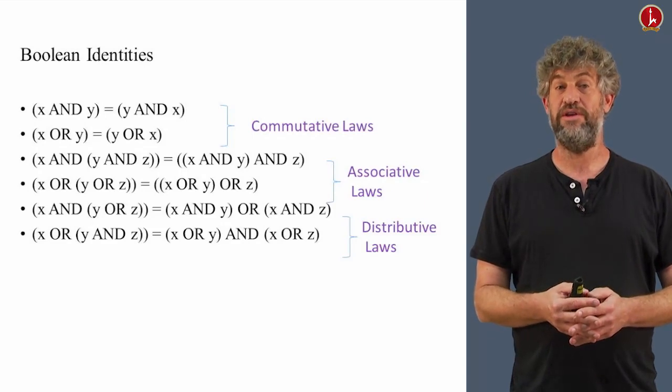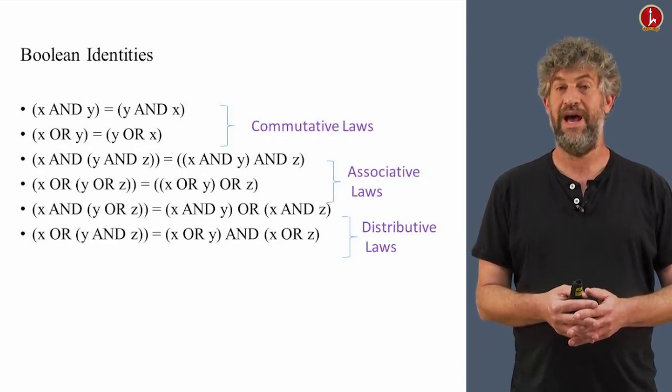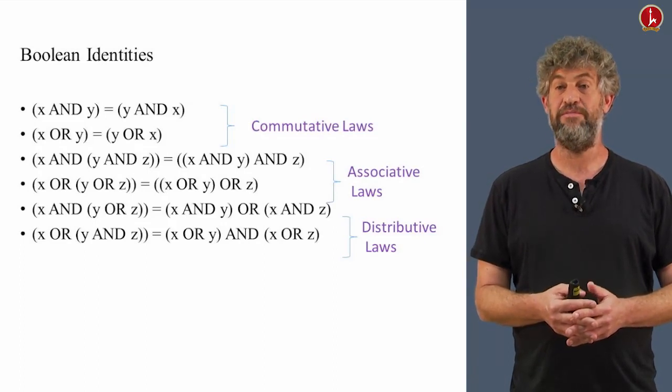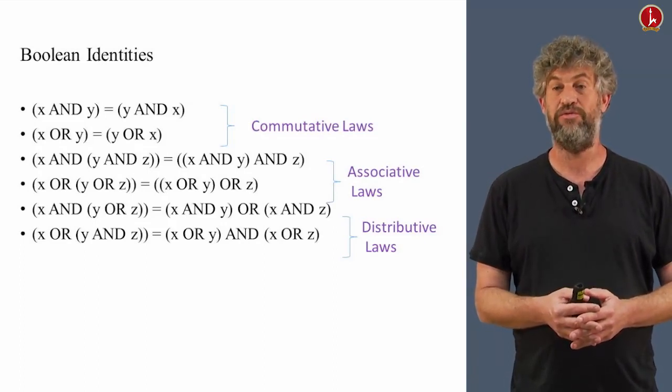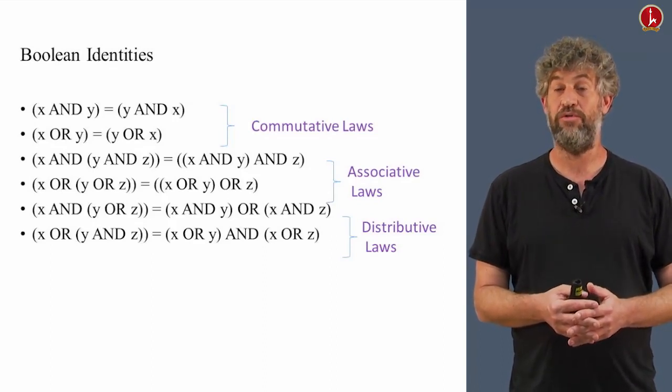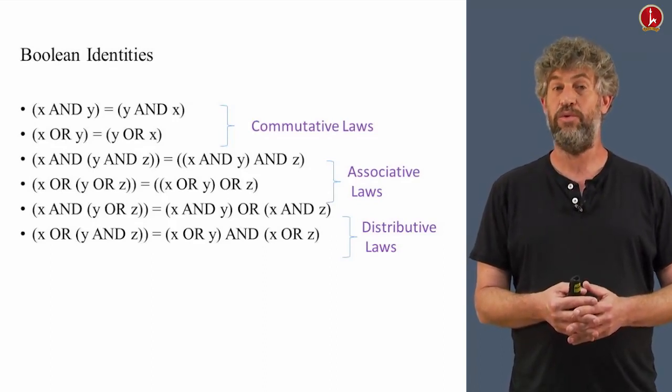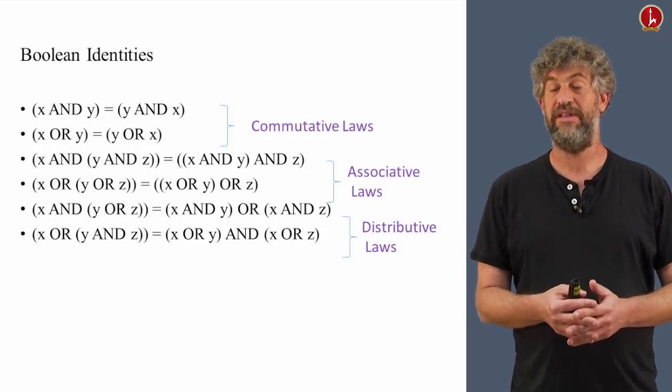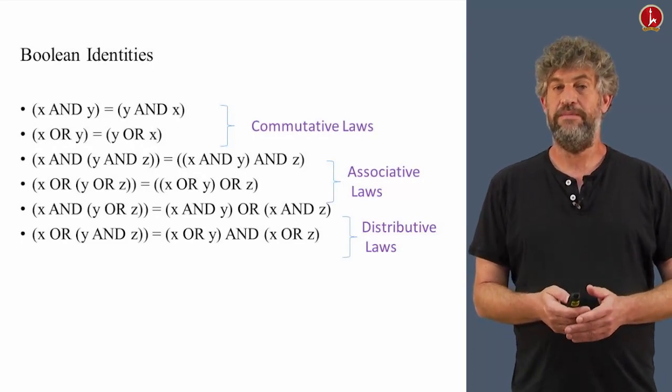As opposed to the usual arithmetic, where we only have a distributive law of multiplication over addition, here we have both the distributive law of AND over OR and the dual law, the distributive law of OR over AND. The same trick works if you want to do x OR (y AND z). That's (x OR y) AND (x OR z).